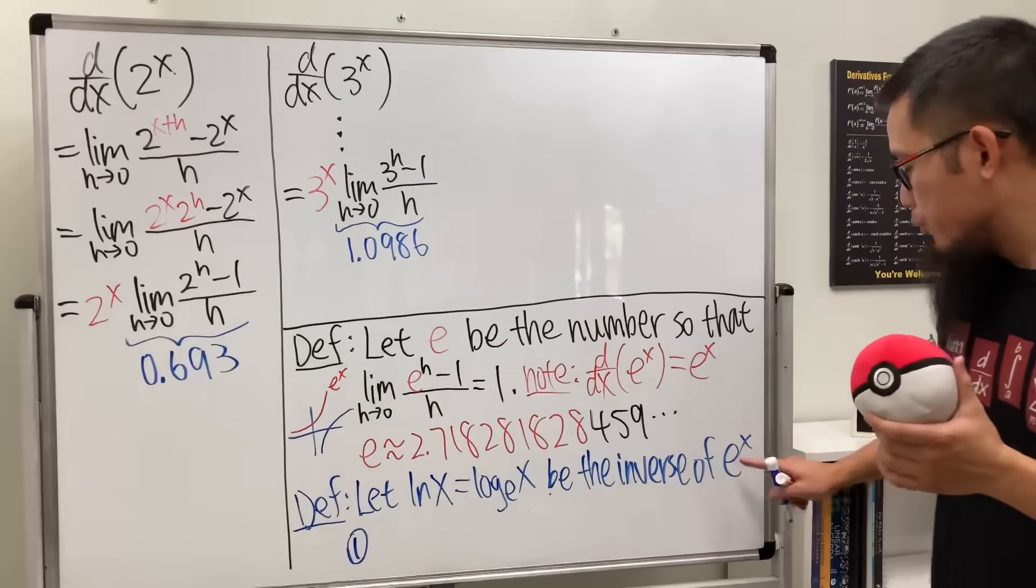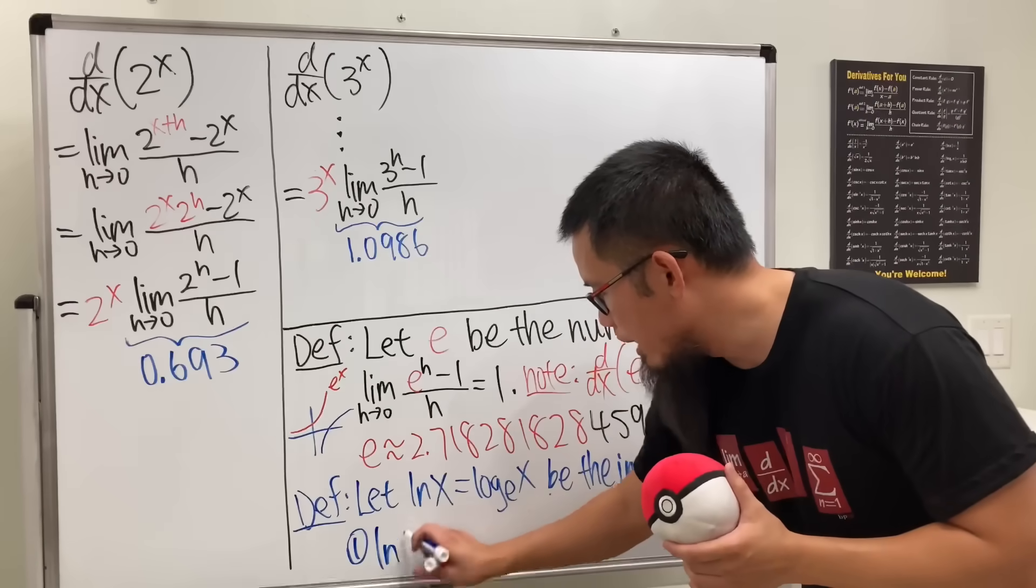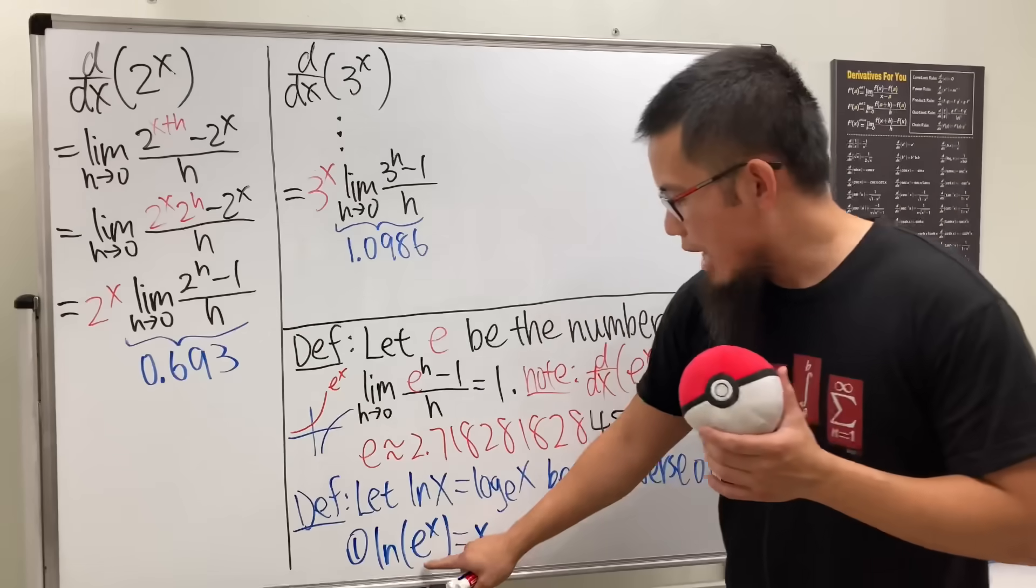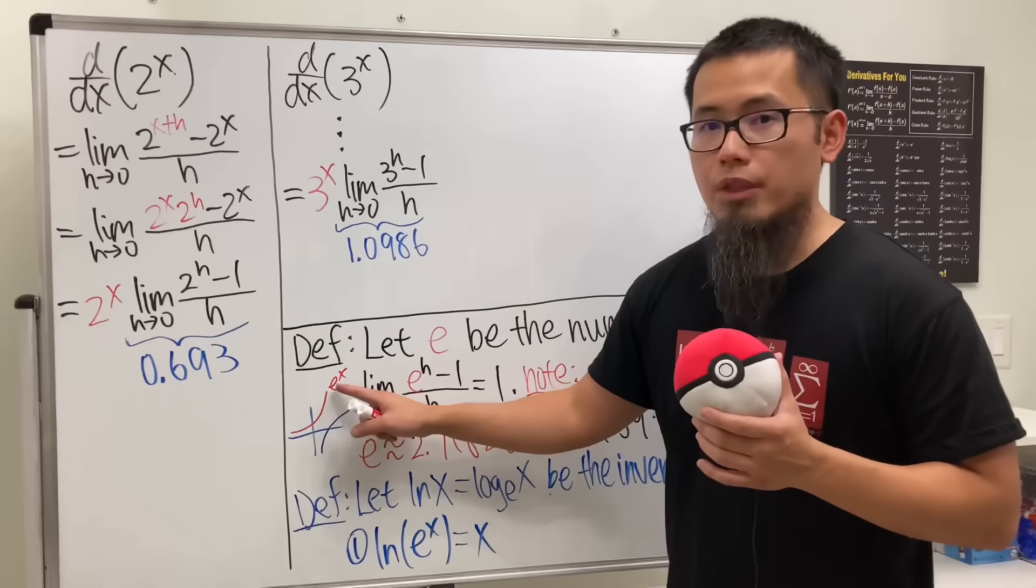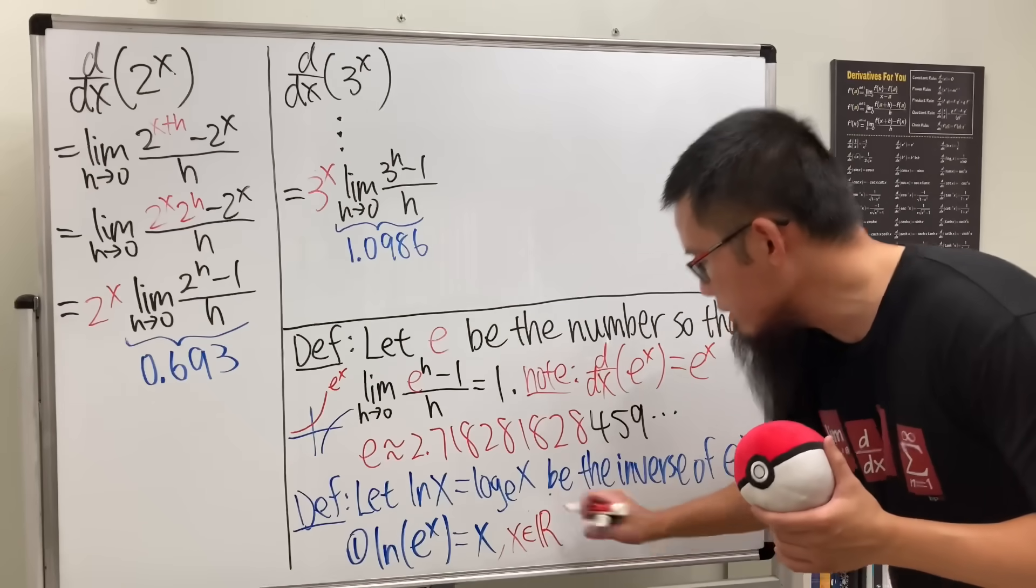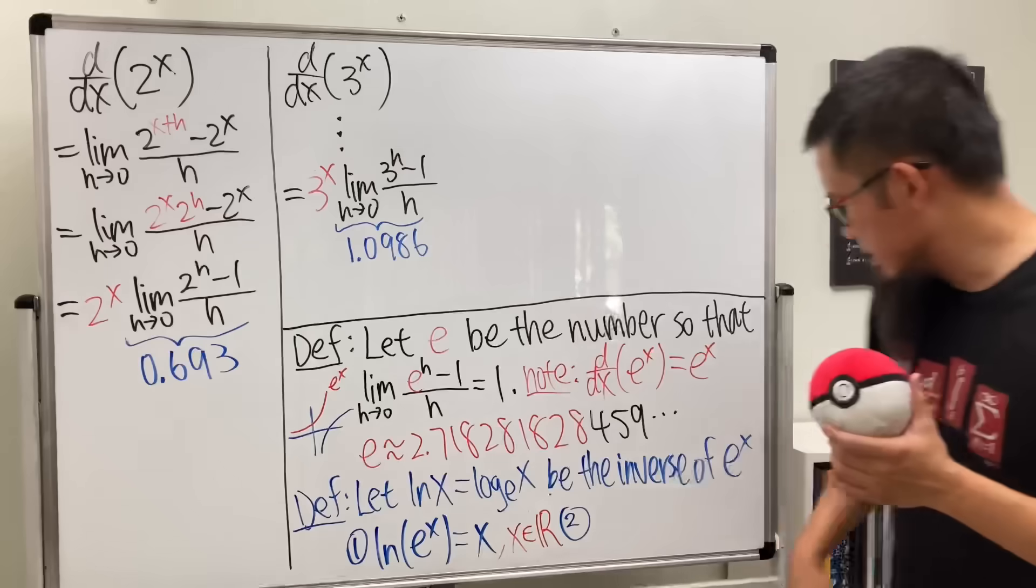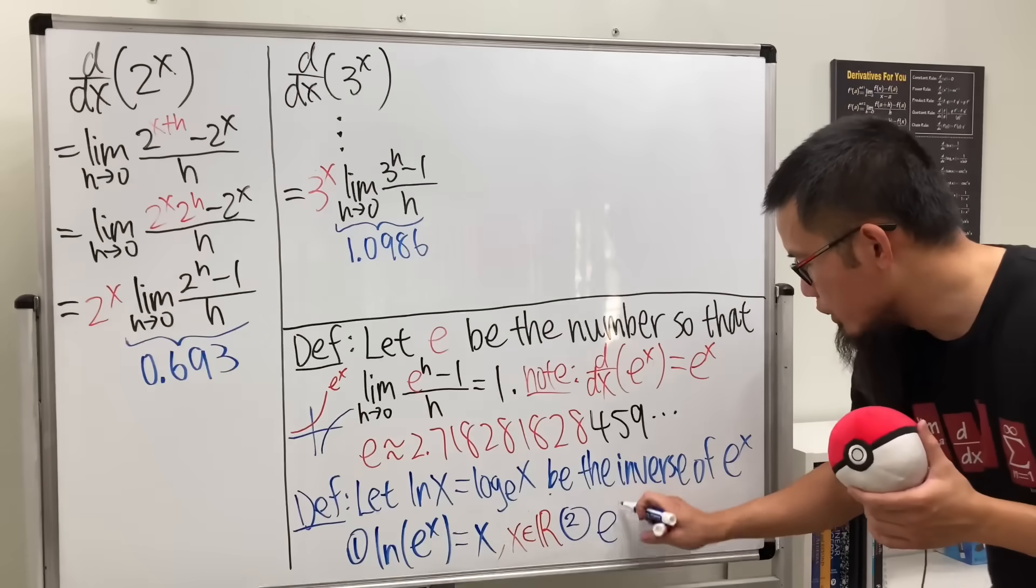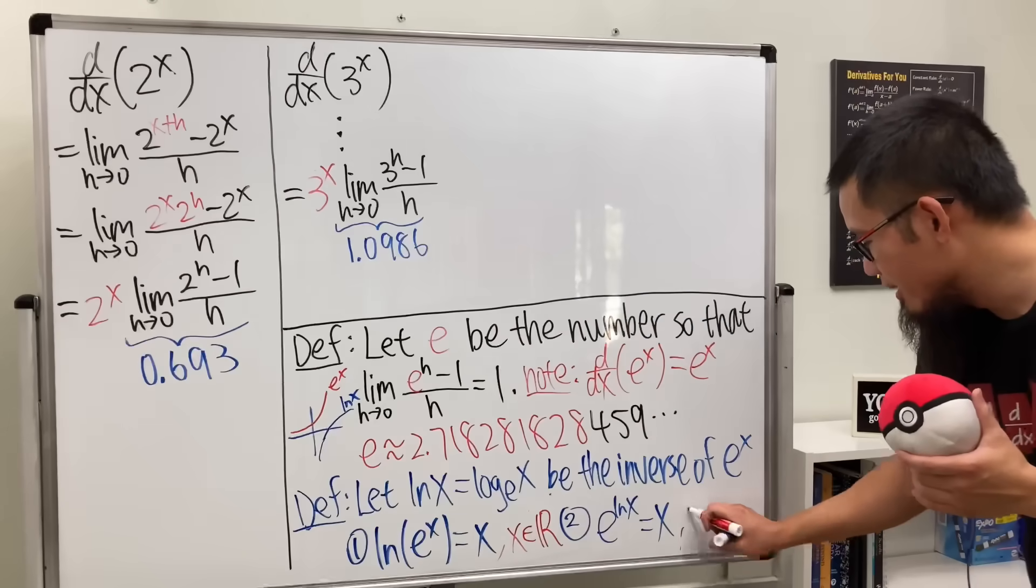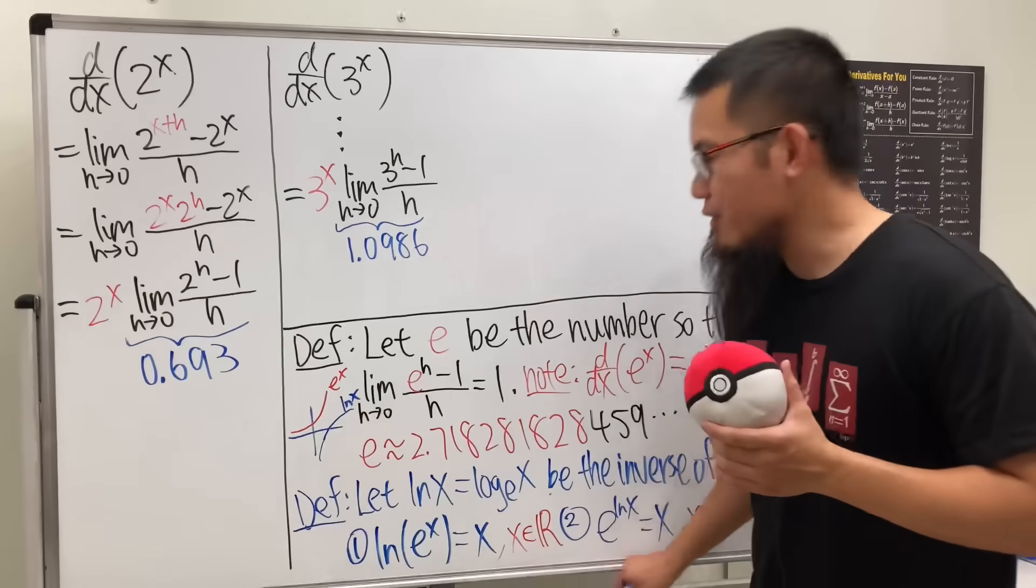Here is the first property. We can put e to the x inside here and we'll just get x back. So when we have ln of e to the x, this is going to give us just x back. Here we have e to the x inside first. If you look at this, the domain for e to the x is all real numbers. So this, we can say x is any real number that you want. And the second property is that we can put the ln x into here. So that means we will get e to the ln x. This will give us x back. This will only work if x is greater than zero.